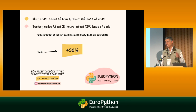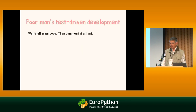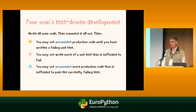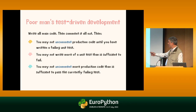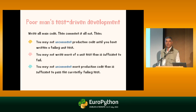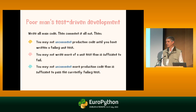I did the next best thing to test-driven development: I commented out all my code and then followed the three rules of the 'poor man's test-driven development,' which are exactly the same as TDD except that I changed two words — instead of 'write' I made them 'uncomment.' It's not as good as the real thing, but it's better than nothing.